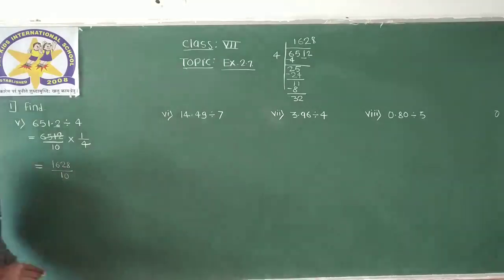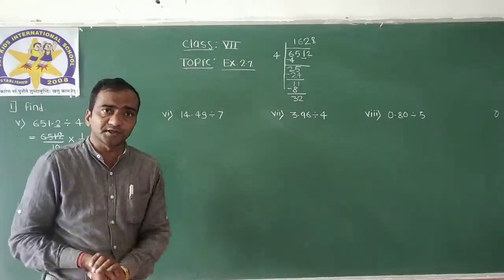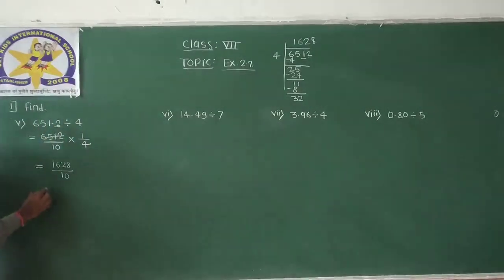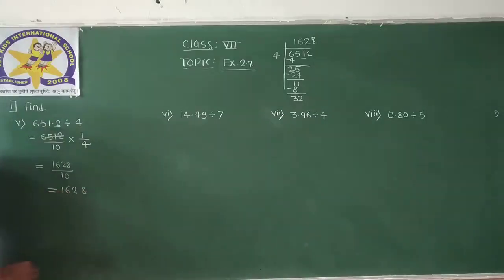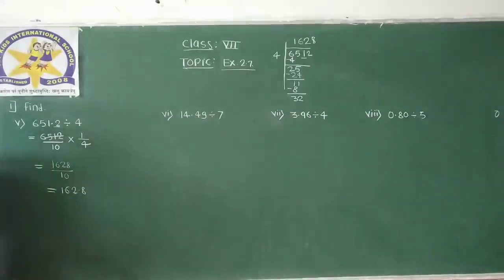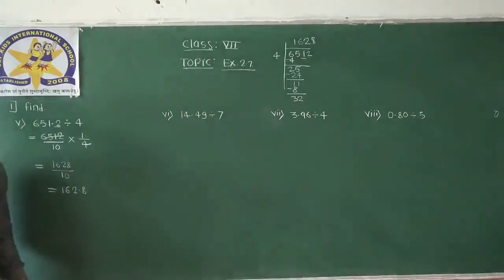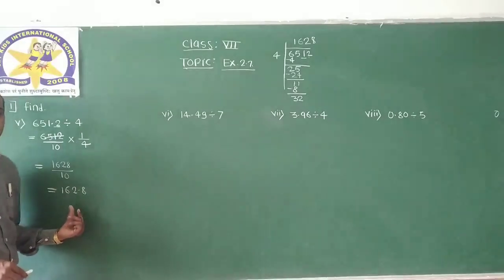If you observe here, there is 1 zero in the denominator. So we write down the numerator which is 1628, and after 1 digit we place the decimal point. So the final answer will be 162.8.